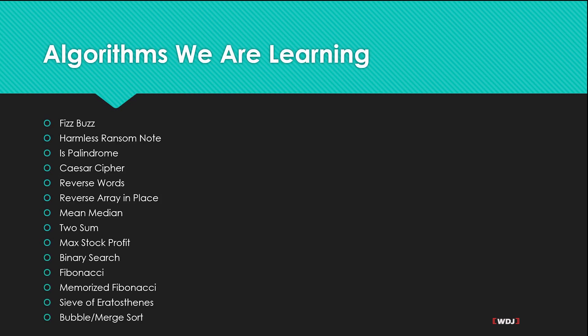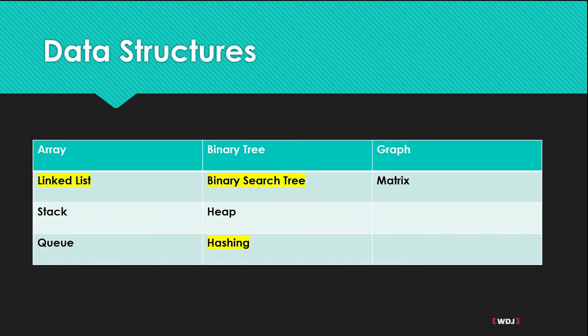Now here are the algorithms we're going to be learning in this series: fizz buzz is a very common one, harmless ransom note. And by the way, the ones in yellow in data structures, those are the ones that we're going to be learning because the other ones, those are mostly the ones that when you're going for a job interview or something like that, they're asked.